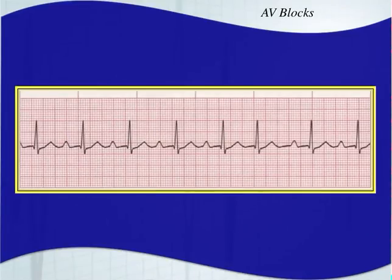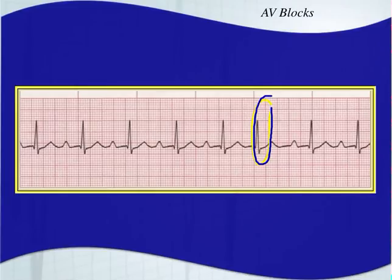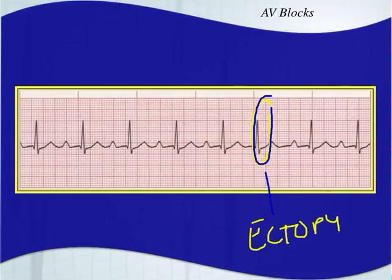Looking at another example: we have a PR interval of constant length and no dropped beats. However, there is an extra beat — that is ectopy and has nothing to do with the underlying rhythm. This is a normal sinus rhythm with a first degree AV block. We'll go over ectopy in a future chapter.